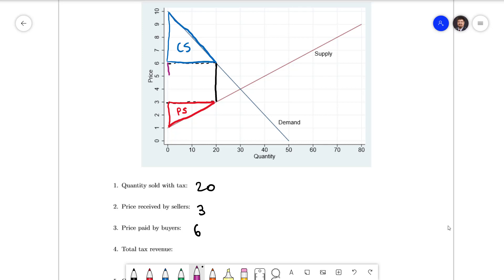Tax revenue is going to be this box in the middle here with a height of the tax wedge. Finally we're going to have this triangle right here. The deadweight loss which is the welfare loss due to our tax.